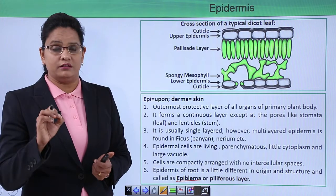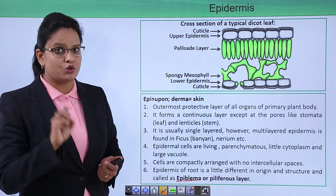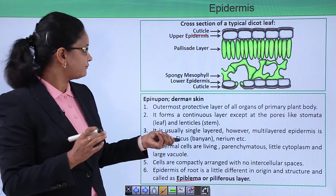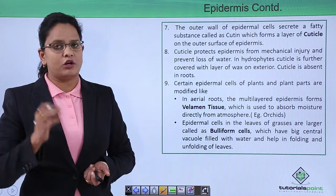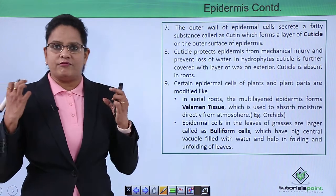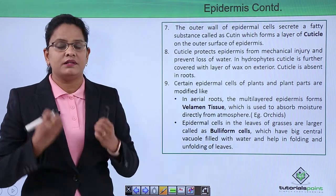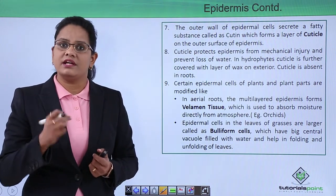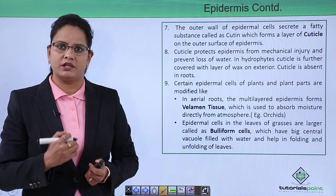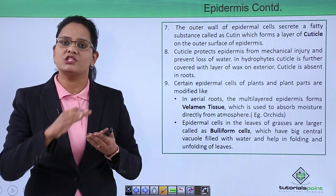Above the epidermis there is a thick coating made up of a fatty substance known as cutin, and this coating is called the cuticle. The cuticle is a waxy coating present on the outer wall of epidermal cells. Its main function is to protect the plant from mechanical injury — so when strong winds blow or heavy rainfall occurs, the leaf does not tear. You may have noticed that during rain, water forms a ball on the leaf surface and falls down — this is because of the waxy cuticle.